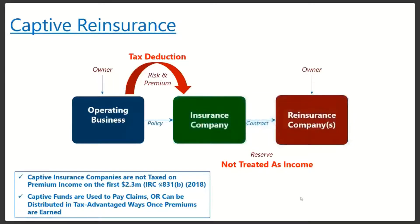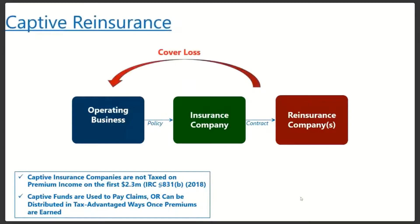There's more behind the scenes. The insurance company can, by contract, transfer their risk from the insurance company to the reinsurance company. In this case, the owner of the business is also going to be the owner of the reinsurance company. They have now created a company that contractually covers some of the risks for both the insurance company and ultimately back to the operating business. If there's a loss in the operating business covered by policies written by the insurance company, that loss will be covered by the insurance company and the reinsurance company.